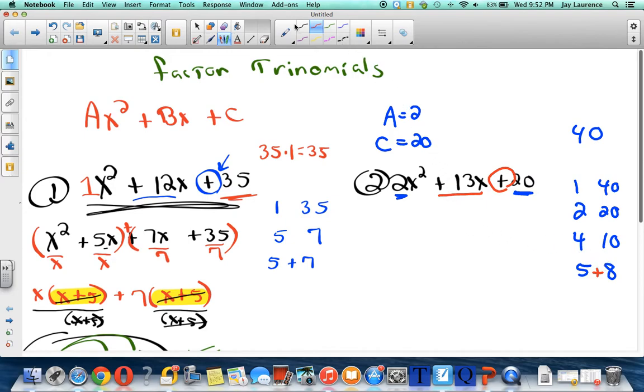So now I rewrite my trinomial as a polynomial of four terms. So I have 2x². I rewrite 13x. I think I'm going to put the 8x first because I like matching the 8x with the 2x². And then the 5x plus 20. Now it's time to group. So I'm going to group these first two, I'm going to group these two, put a plus sign between.